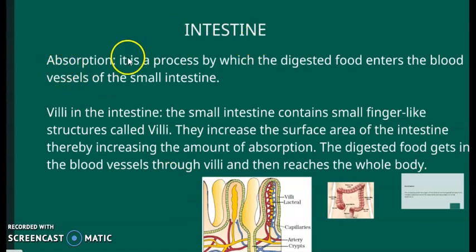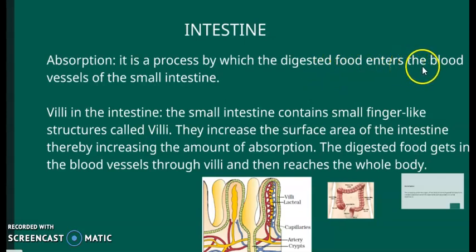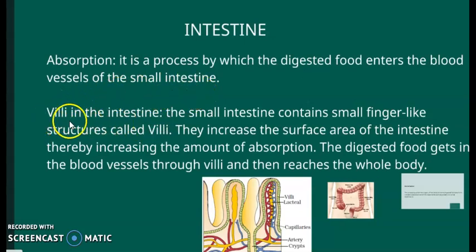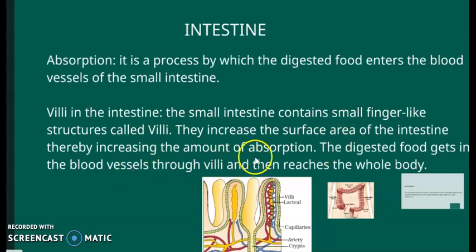The main role of the small intestine is absorption — the process by which digested food enters into the blood vessels of the small intestine. In the small intestine, there are finger-like projections called villi. Each villus increases the surface area so that more absorption can occur.